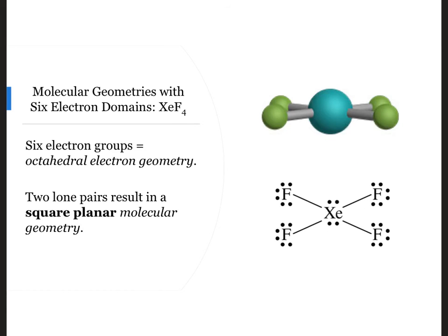If we have two lone pairs of electrons in an octahedral electronic geometry, we put the second pair in the position axial to the first one to allow the most room. This gives xenon tetrafluoride a square planar molecular geometry.